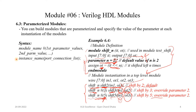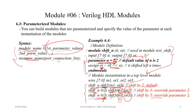This is the syntax: the module name, then we have to use the hash keyword, and then the new parameter value. If you have multiple parameters — here we have only one parameter — if you have multiple parameters, we can pass those values as parameter 1 value, then comma, parameter 2 value, and so on. Then here is the instance name and we have to do the port connection.